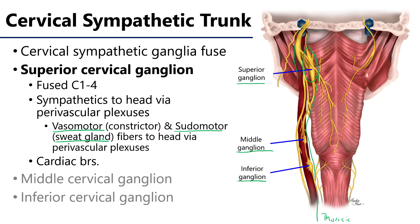Also coming off the superior cervical ganglia, we see branches that descend toward the thoracic cavity to participate in the cardiac plexus — an autonomic plexus that helps regulate heart rate extrinsically. We'll talk more about that in block three when we discuss the autonomics of the thorax.